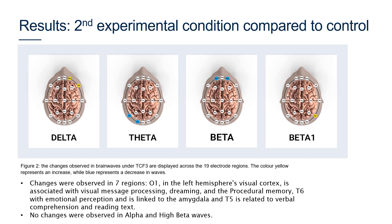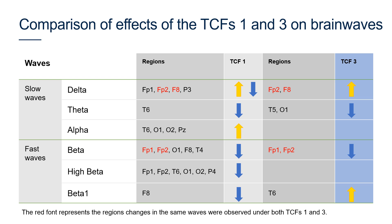The results of the second experimental condition compared to the control demonstrated changes in seven regions. The regions significantly influenced under T-consciousness field 3 were the right frontal cortex, temporal cortex, prefrontal cortex and left occipital cortex. O1, located in the left hemisphere's visual cortex, is associated with visual message processing, dreaming and procedural memory. T6 is associated with emotional perception and is linked to the amygdala. T5 is related to verbal comprehension and reading text. The comparison table shows the effects of T-consciousness fields 1 and 3 on brainwaves, with red font representing regions where changes in the same waves were observed under both fields.